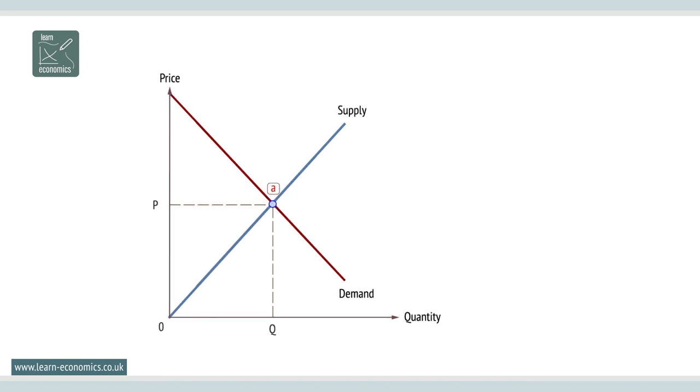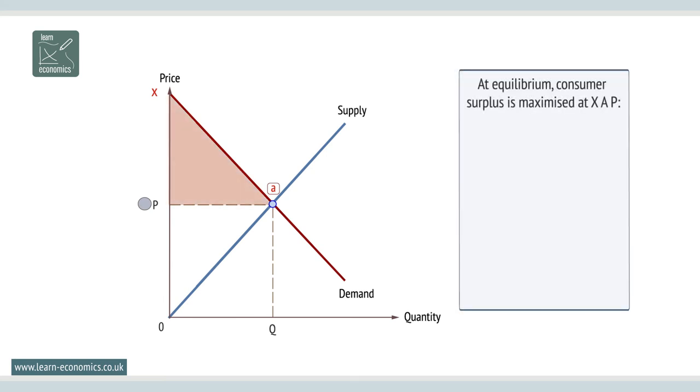Economic welfare, as measured by consumer and producer surplus, is maximized at the market equilibrium price and quantity. At equilibrium, consumer surplus is maximized at area XAP and producer surplus is maximized at PA0.